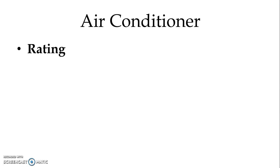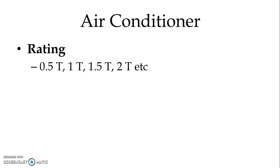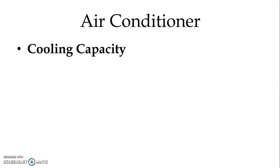Now let us look at the rating of the air conditioner. For the room type of air conditioner, we normally have half ton, 1 ton, 1.5 ton and mostly up to 2 ton ratings. Let us understand what exactly we mean by 1 ton or 2 ton capacity — that is the cooling capacity.